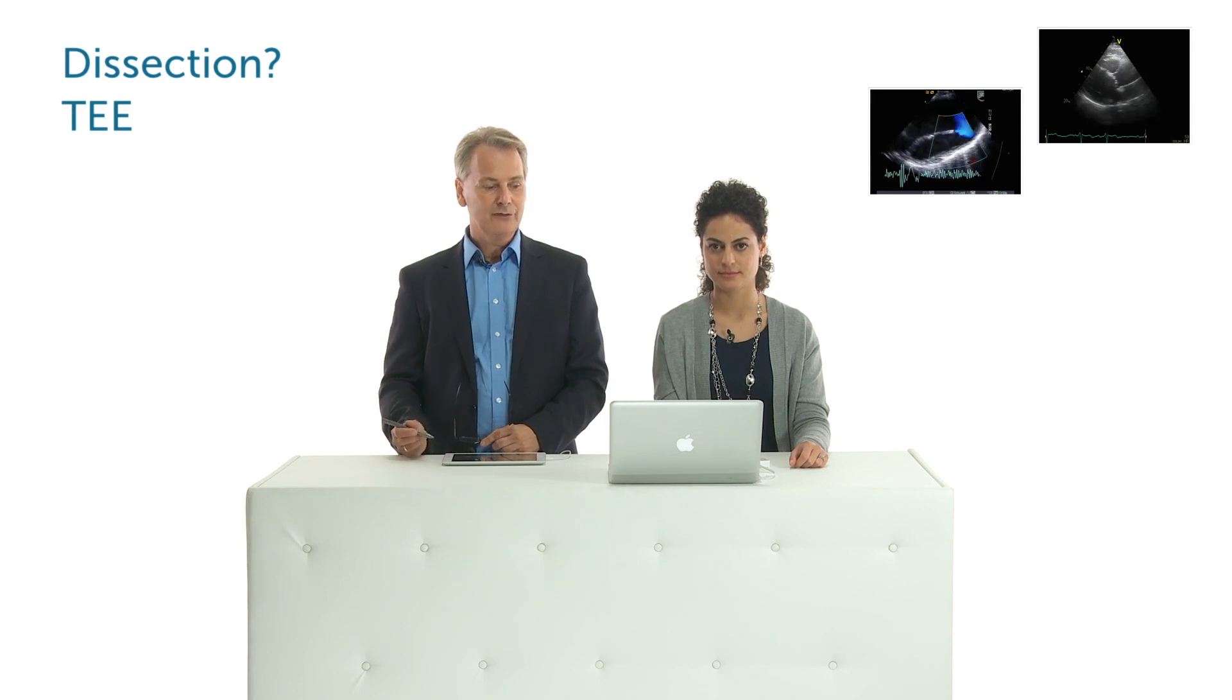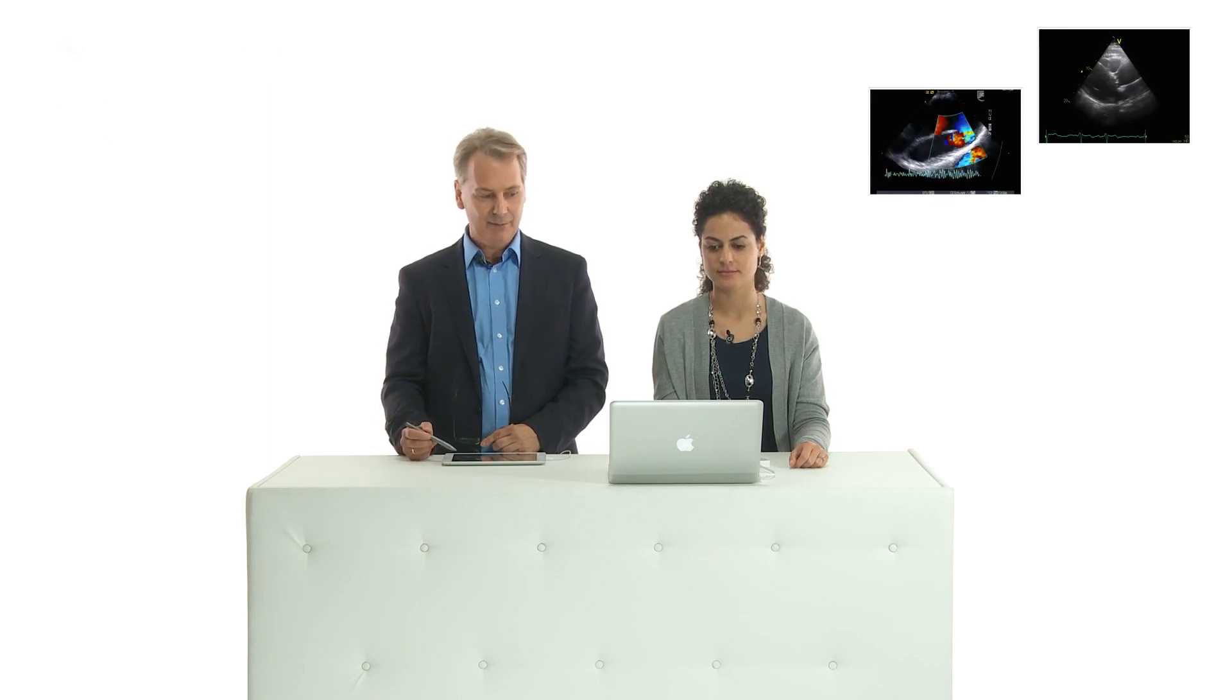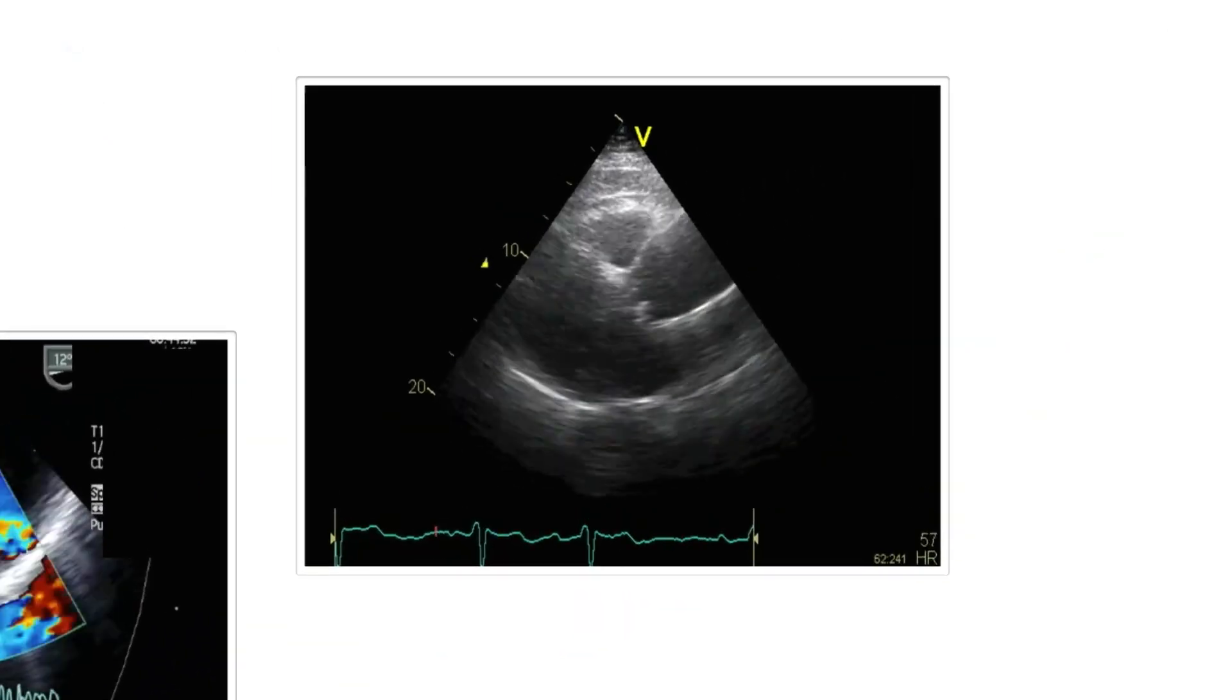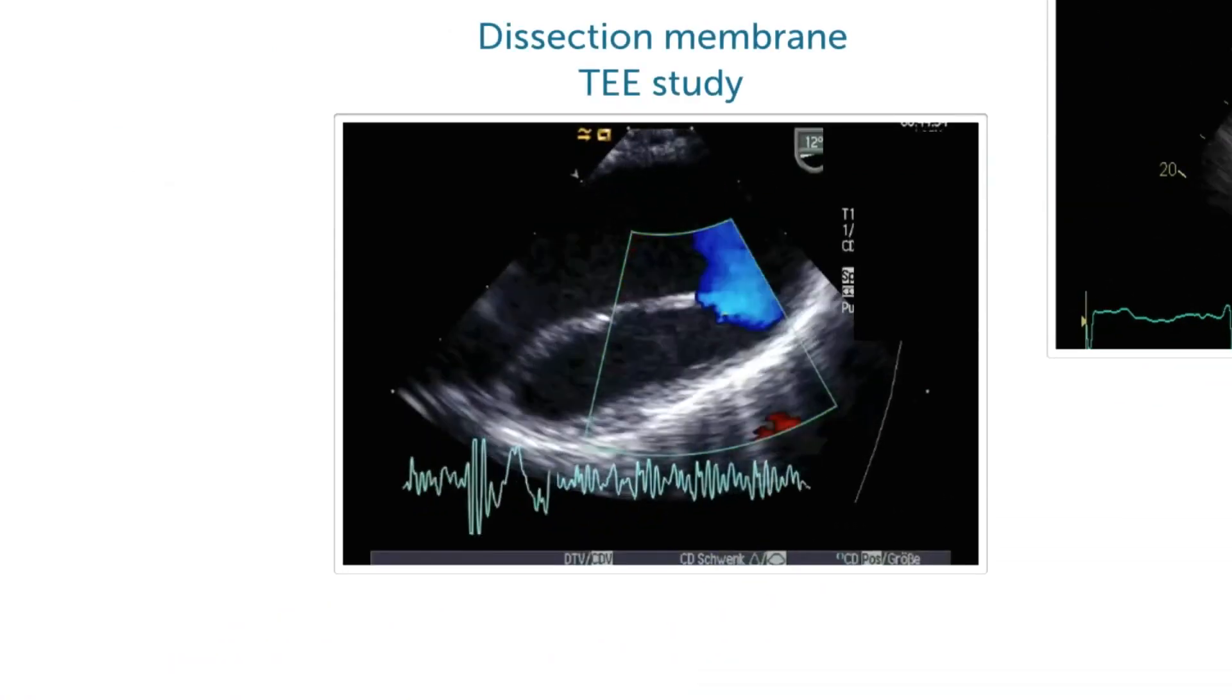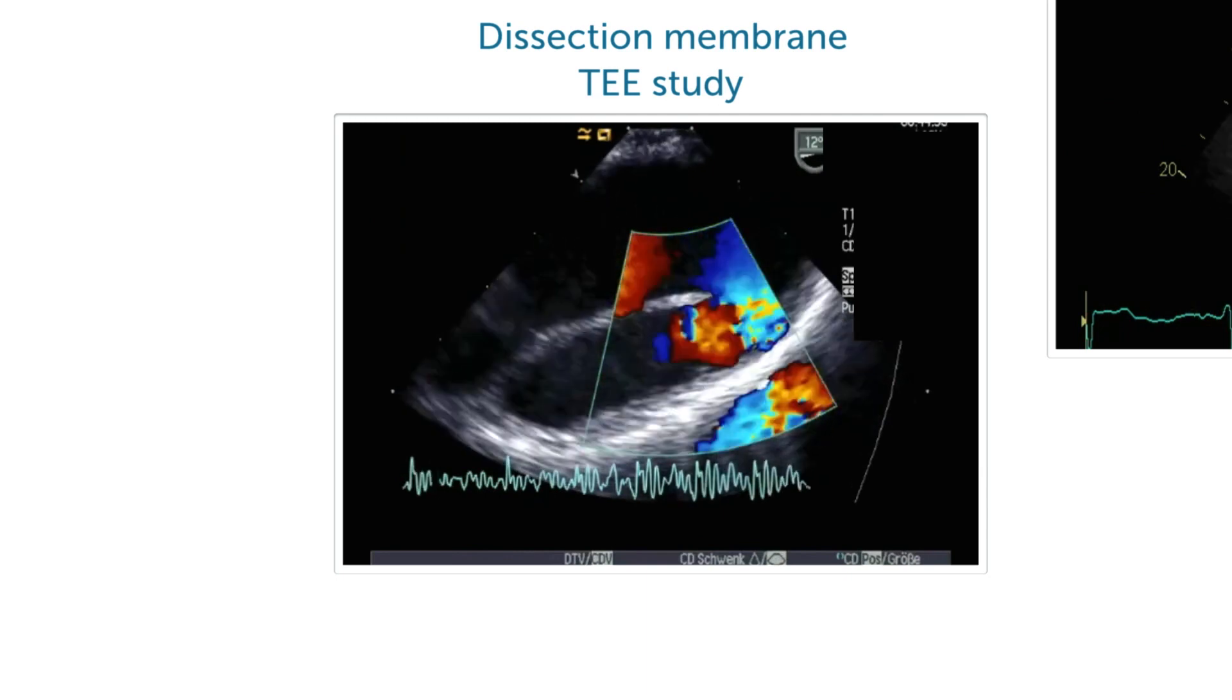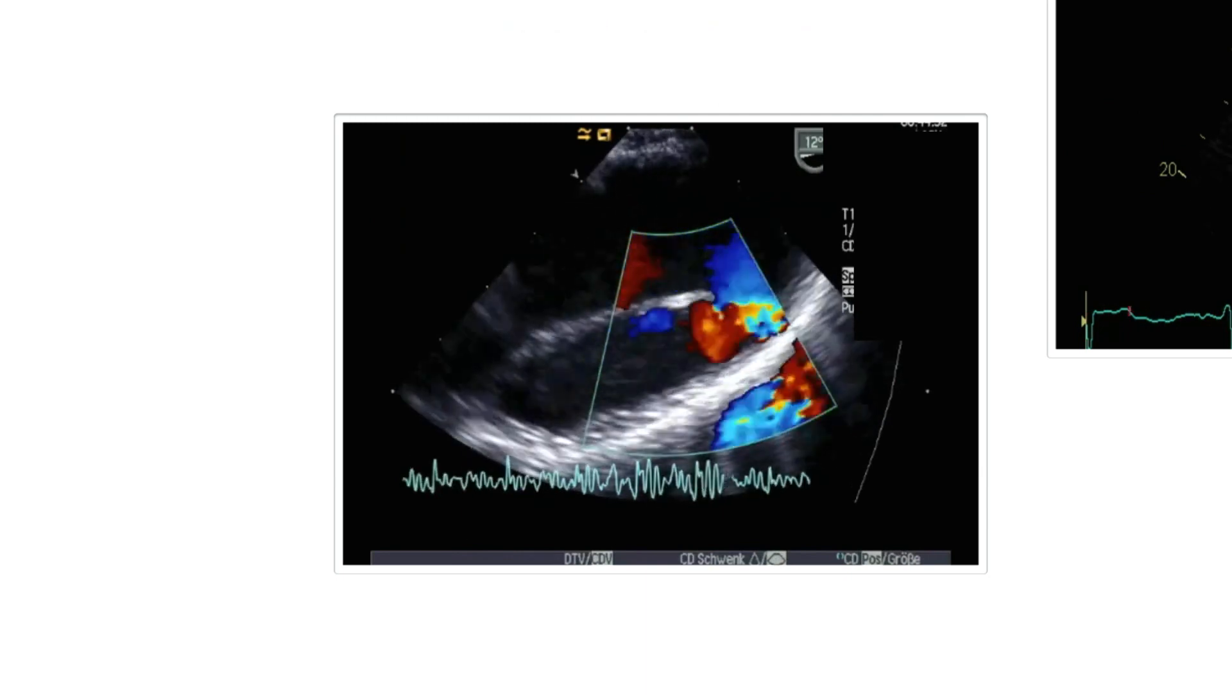But when we come to echocardiography, I think one of the major advantages is that we can suspect dissection already from a transthoracic echocardiogram and we can see things, for example such as here on the left side, where we have a dissection membrane and we can see the entry site and even the exit site of a dissection.